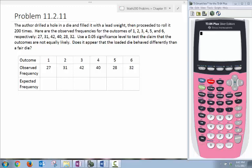Here are the observed frequencies for the outcomes of 1, 2, 3, 4, 5, and 6 respectively: 27, 31, 42, 40, 28, and 32. Use a 0.05 significance level to test the claim that the outcomes are not equally likely. Does it appear that the loaded die behaves differently than a fair die?